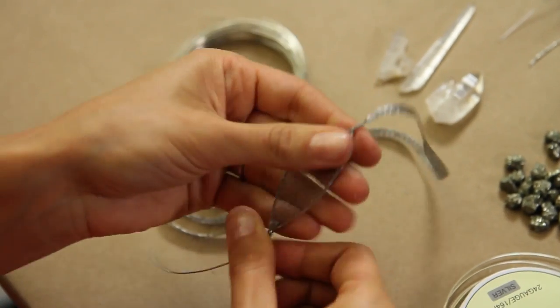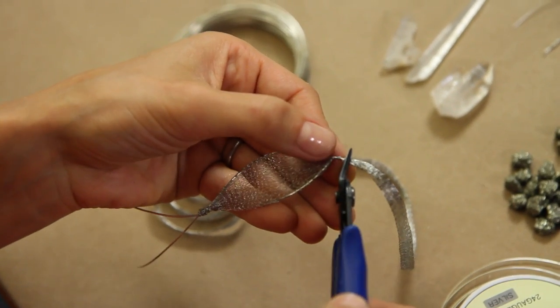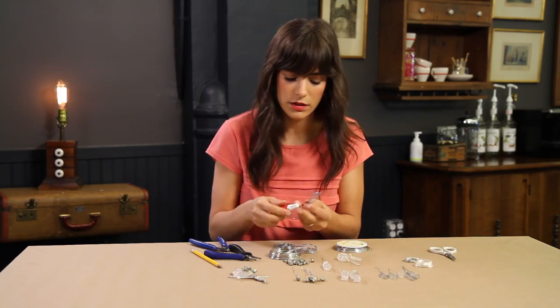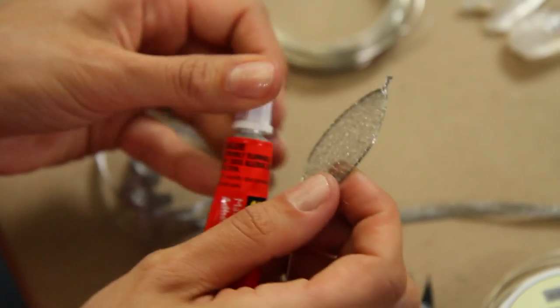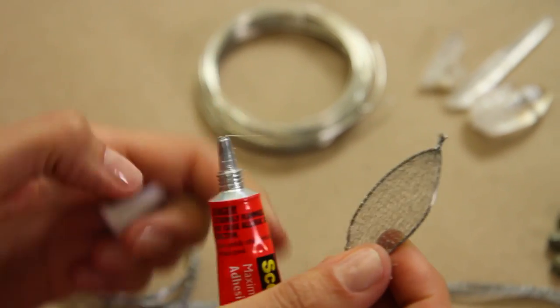And then with wire snippers, just snip it off, leaving kind of a little length at the tip. Then when you have that done, you can add a little bit of adhesive, like a crazy sort of glue, anything that dries fast.